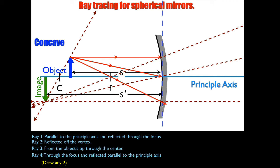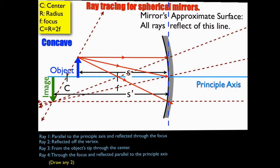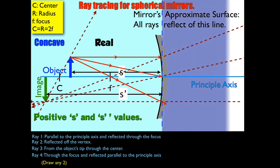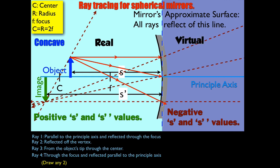The distance between the image and the front plane of the mirror is called S'. We're using S and S' mainly because that's what the textbook uses — some textbooks use P and Q, so keep that in mind. Everything on the left-hand side of the mirror is where the light belongs, so that's called the real side. The image here is real and inverted. Mathematically, everything on the real side has positive S and positive S' values, while the right-hand side is the virtual side with negative S and negative S' values.